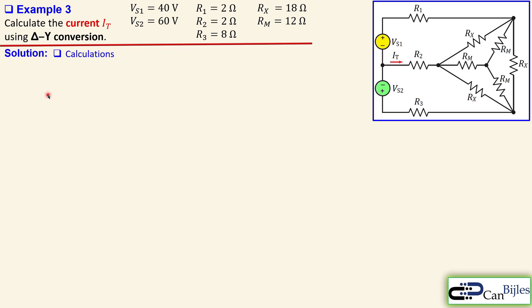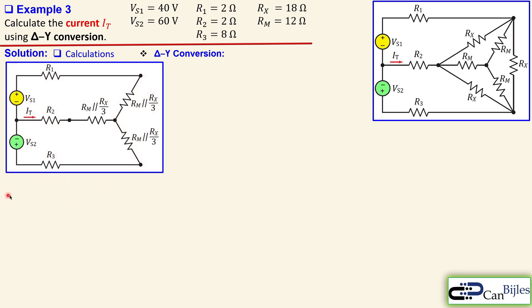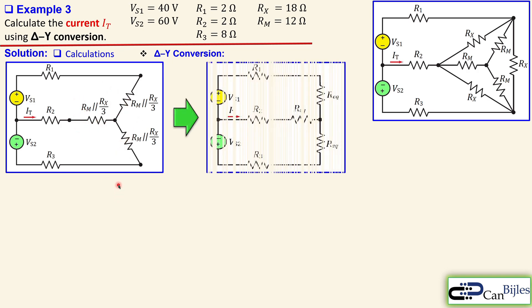We convert the balanced delta of three equal RX resistors to a Y configuration. Since all three are equal, each resulting Y resistor is RX divided by 3, which appears in parallel with the corresponding RM resistor. The equivalent resistance R_eq equals RM times (RX/3) divided by (RM + RX/3), which gives 12 times 6 divided by 18, equal to 4 ohms. So we have 4 ohms in each branch of the converted Y, alongside R1 equals 2 ohms, R2 equals 2 ohms, and R3 equals 8 ohms.